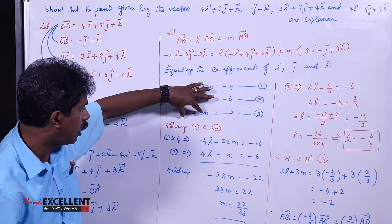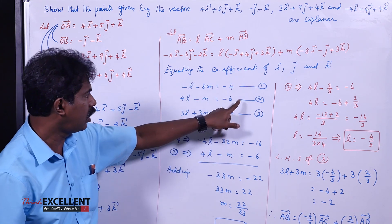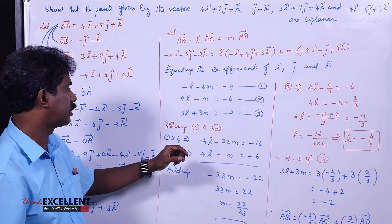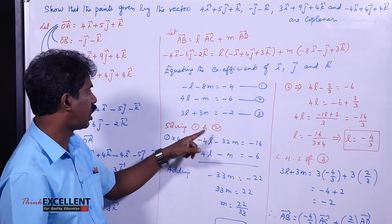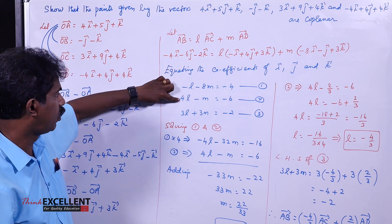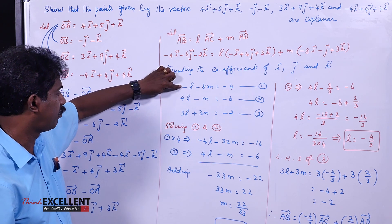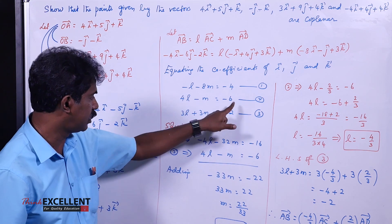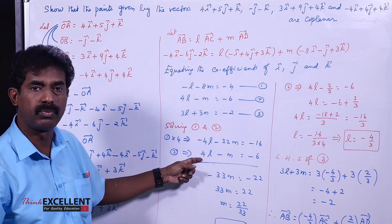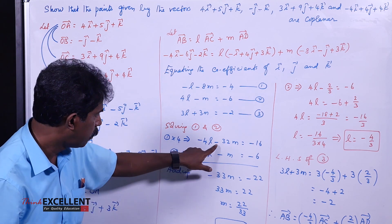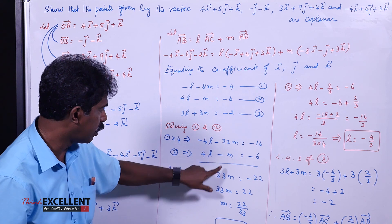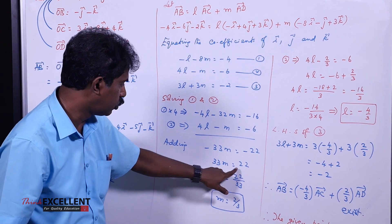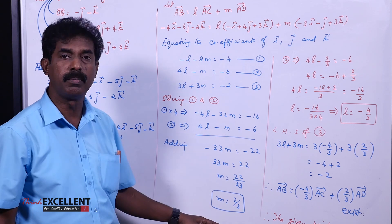Solve equations 1 and 2: multiply equation 1 by 4 to get minus 4L minus 32M equals minus 16. Write equation 2 as it is: 4L minus M equals minus 6. Adding them, L cancels, giving minus 33M equals minus 22. Cancelling the minus signs, 33M equals 22, so M equals 22 by 33, which simplifies to 2 by 3. Substituting M into equation 2: 4L minus 2/3 equals minus 6, so 4L equals minus 16/3, giving L equals minus 4 by 3.